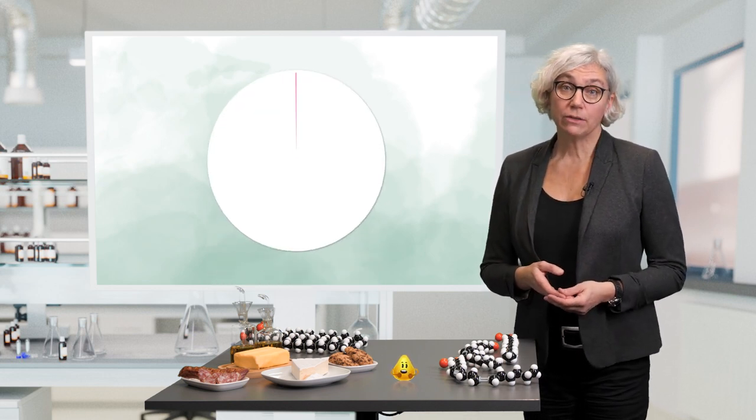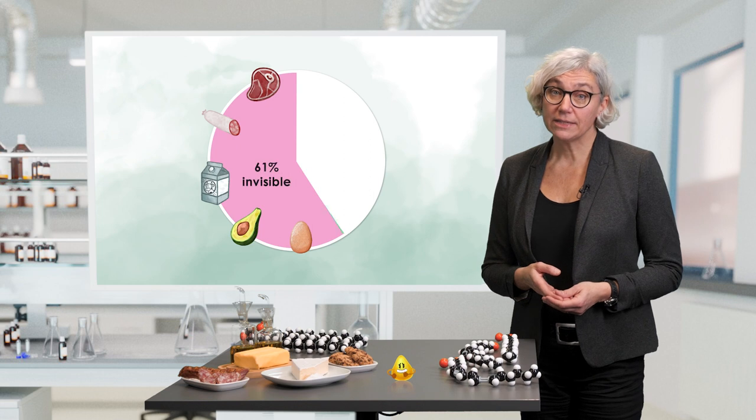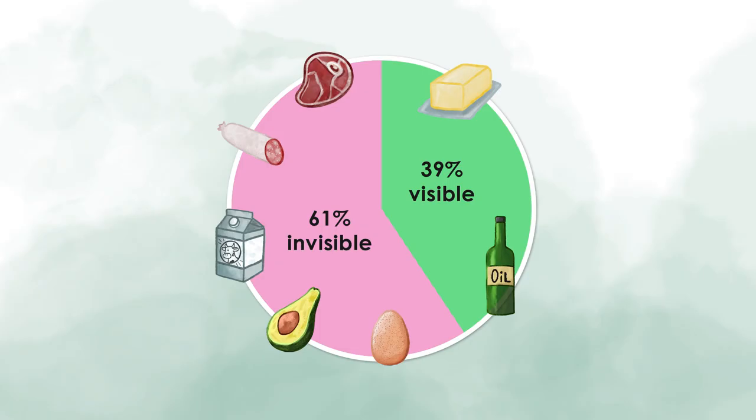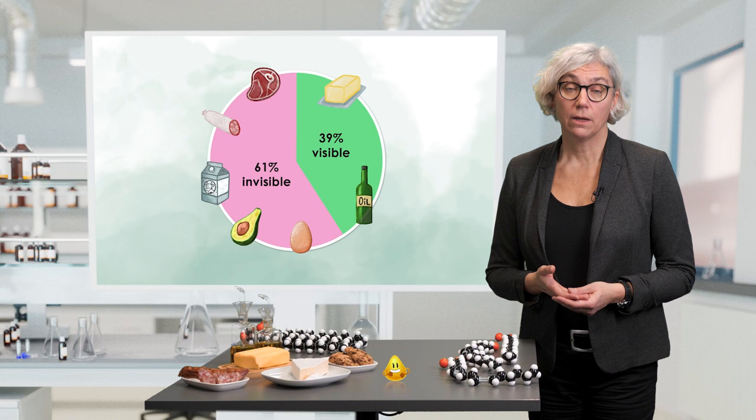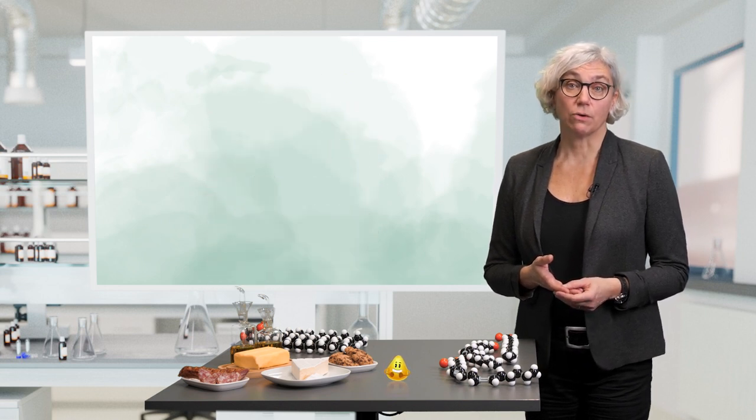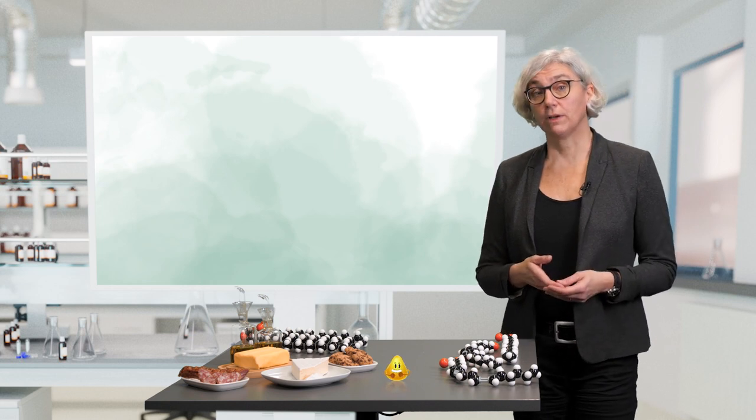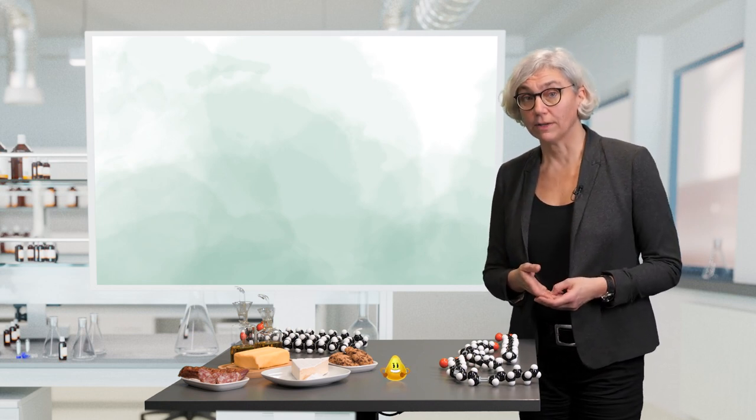In approximately two-thirds of food types, we cannot see the fat, so we should be careful. You might also have heard that some types of fat are good and that we should avoid or reduce the consumption of other types of fats. To better understand why some types of fats and oils are good and why we should avoid others, we need to cope with the chemical structure of fats and oils.